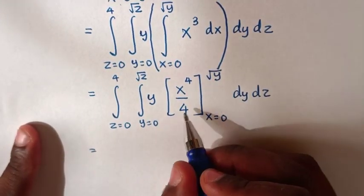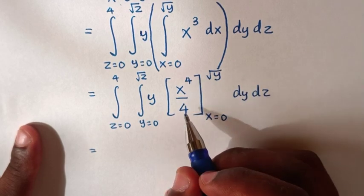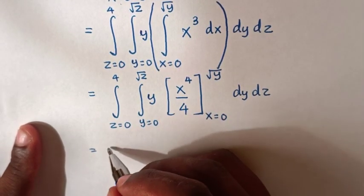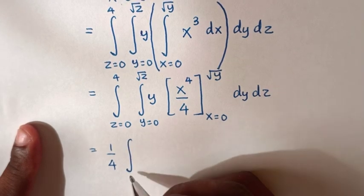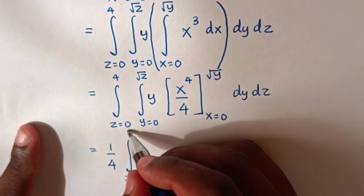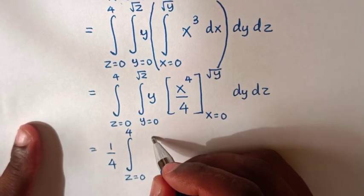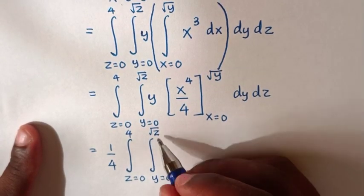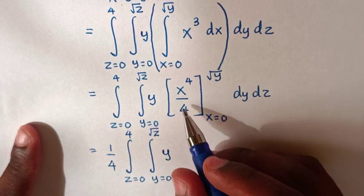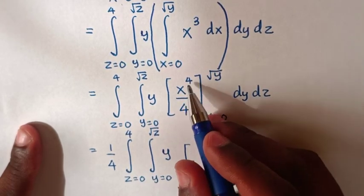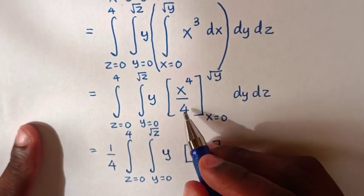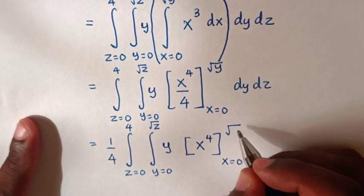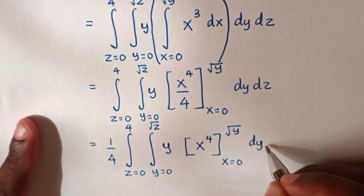This will be equal to: from inside the bracket, x⁴ over 4. The constant here is 1 over 4, which will move outside the integral. So it will be 1 over 4, integral within the limits z equals 0 up to 4, and then another integral within the limits y equals 0 up to square root of z. Then y times x⁴ in the bracket, with 1 over 4 moved outside, from x equals 0 to square root of y, dy dz.